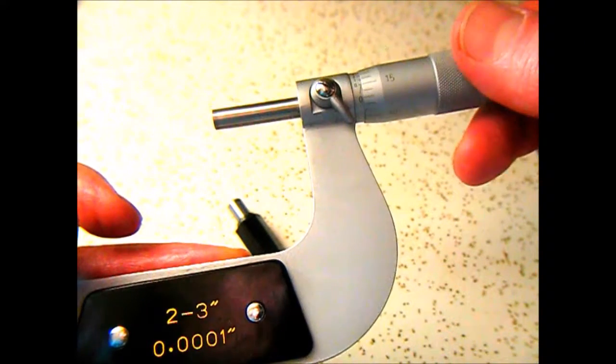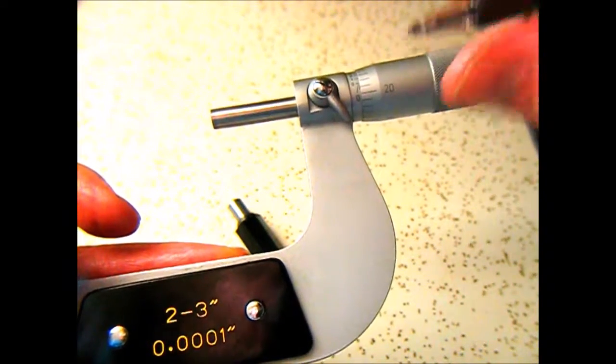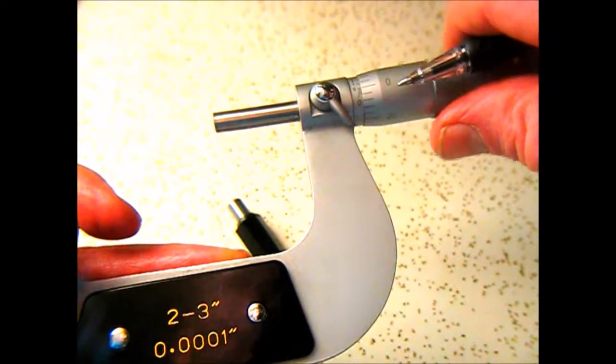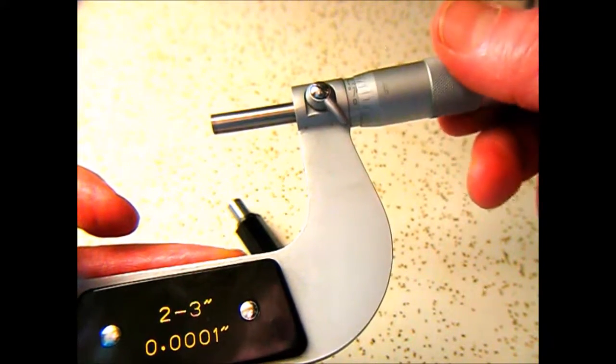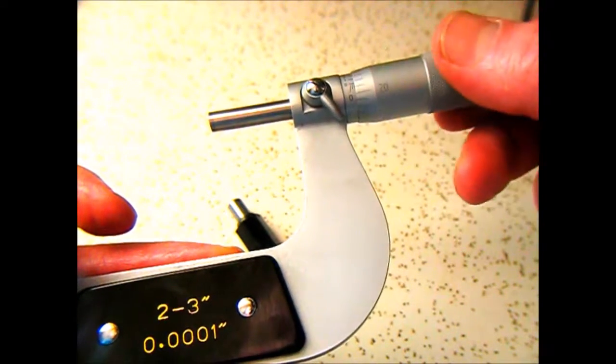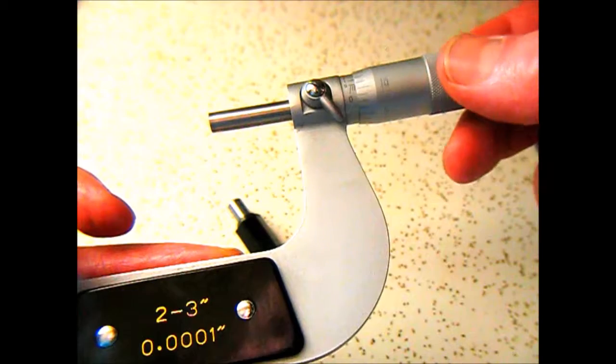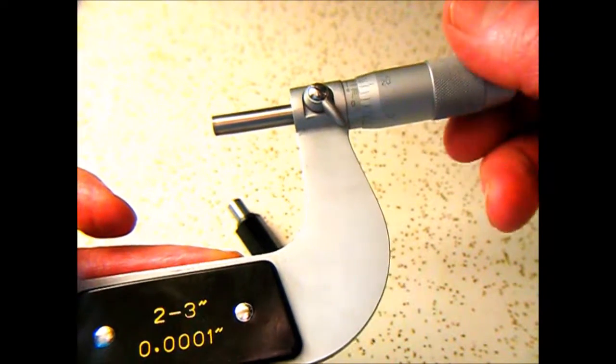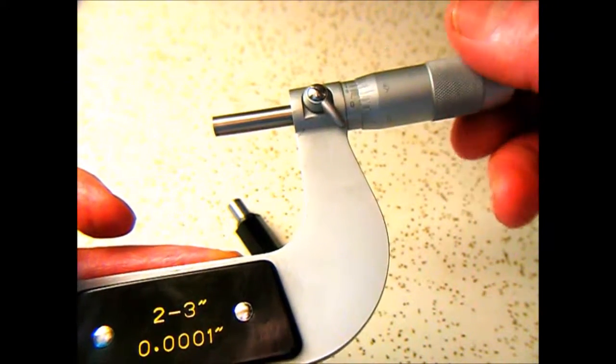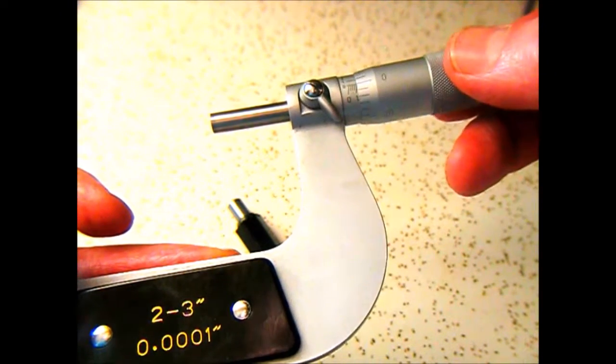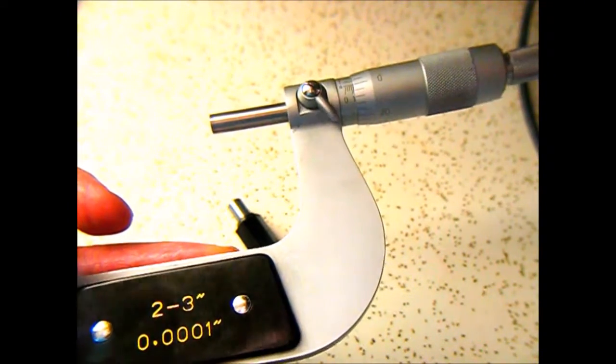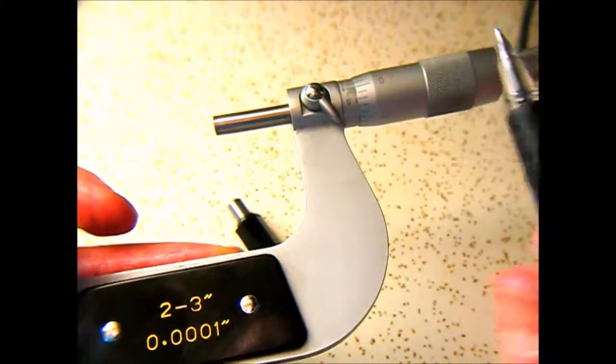Now, if you watch, there are twenty-five graduations when you get back to zero. So if you rotate that four times, twenty-five times four is one hundred. So now you've run it all the way to the next graduation, which is a tenth of an inch.